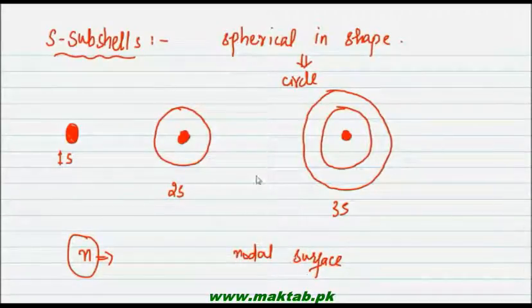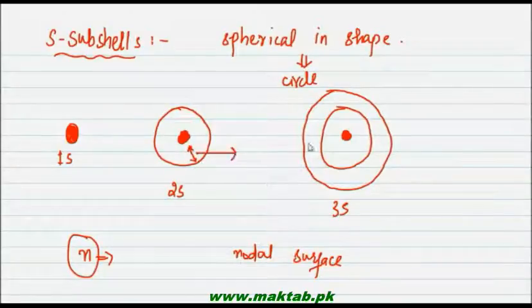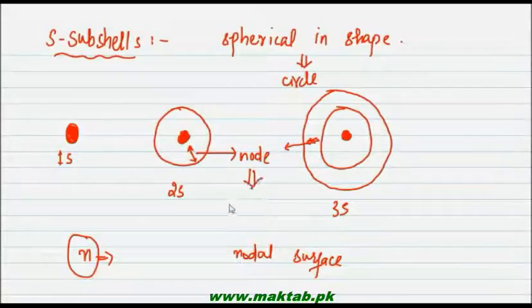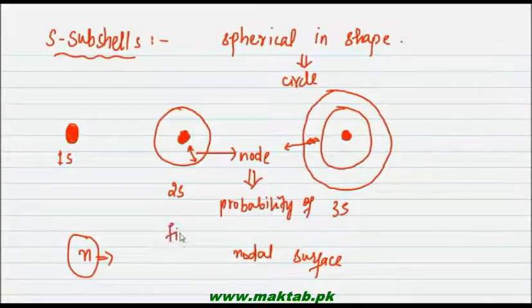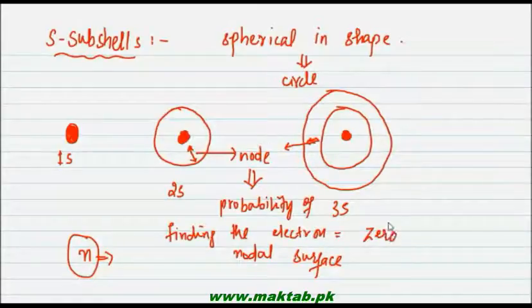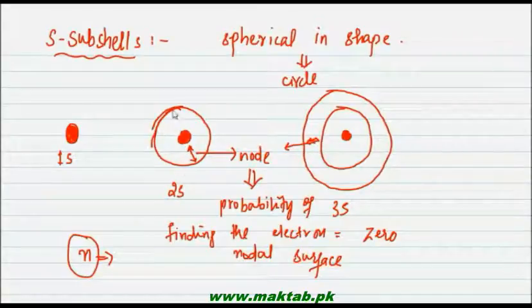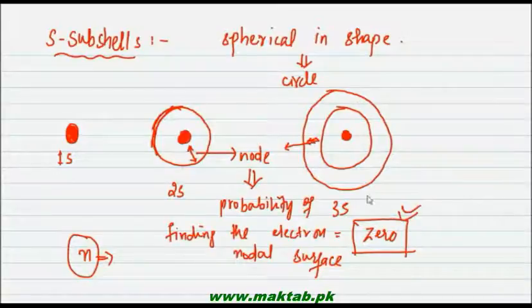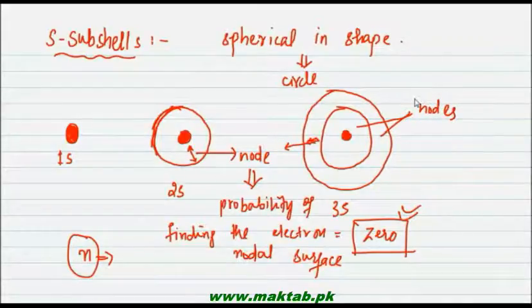Now here is another definition: the nodal surface. Nodes are areas between two sub-shells where the probability of finding an electron is zero. If you have the electron in 1s and then 2s, the region in between — that region — is called a node. Nodes are those areas where the probability of finding an electron is zero.